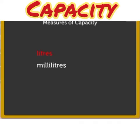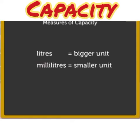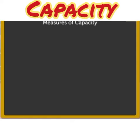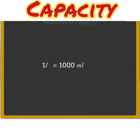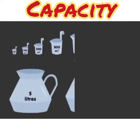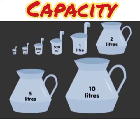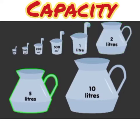Litre is the bigger unit of capacity and millilitre is the smaller unit of capacity. You must remember that 1 litre is equal to 1000 millilitres. To measure capacity, we use measuring cans of standard measurement — you can see a 50 mL, 100 mL, 200 mL, 500 mL, 1 litre, 2 litres, 5 litres and 10 litres measuring can.